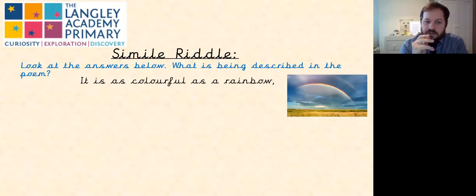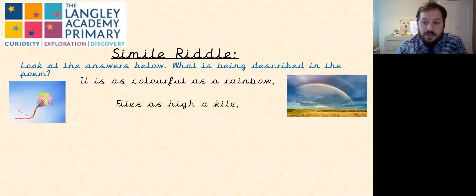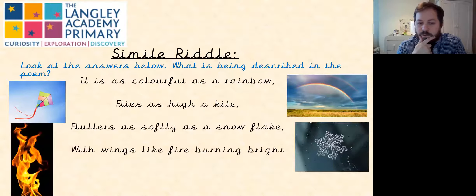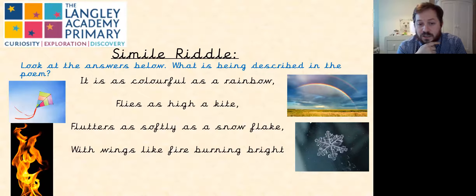It's your first clue — it's as colourful as a rainbow. Second clue, flies as high as a kite, flutters as softly as a snowflake. And the fourth and final clue is with wings like fire burning bright. So your full set of clues: it is as colourful as a rainbow, flies as high as a kite, flutters as softly as a snowflake, with wings like fire burning bright. What are your thoughts?